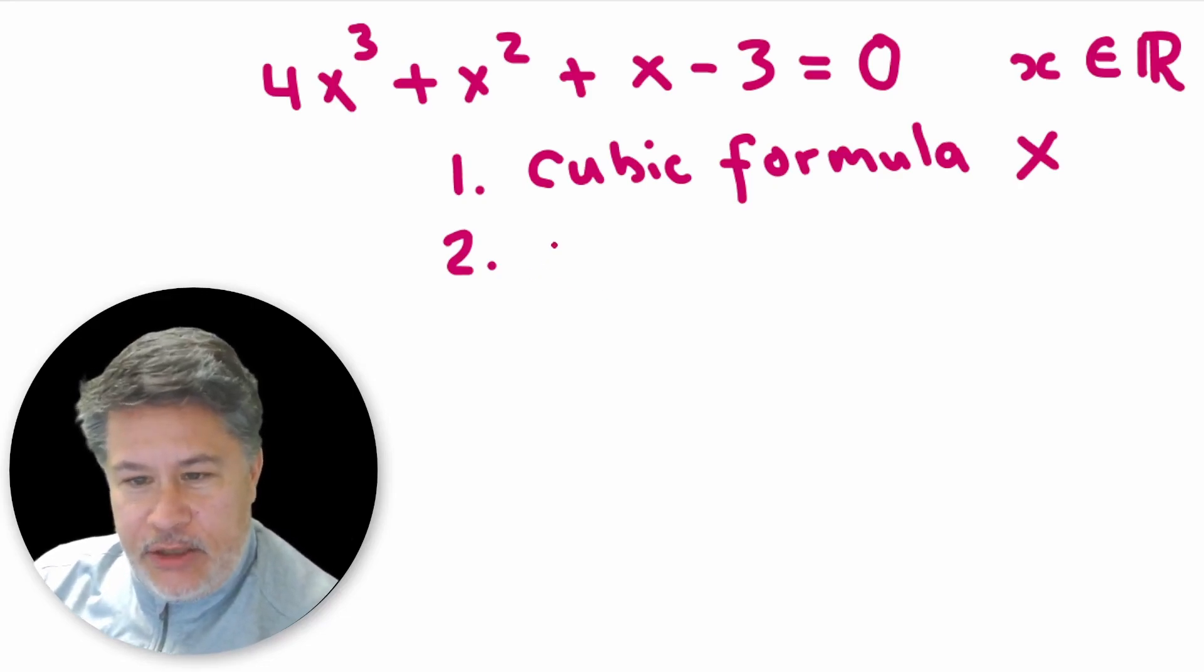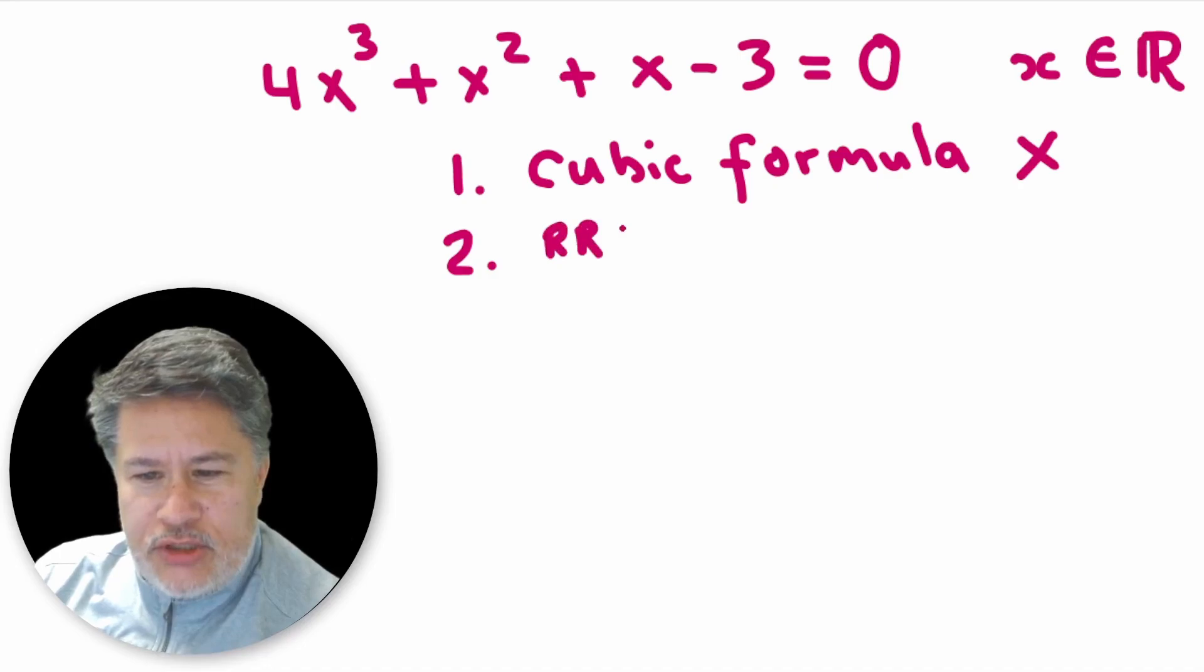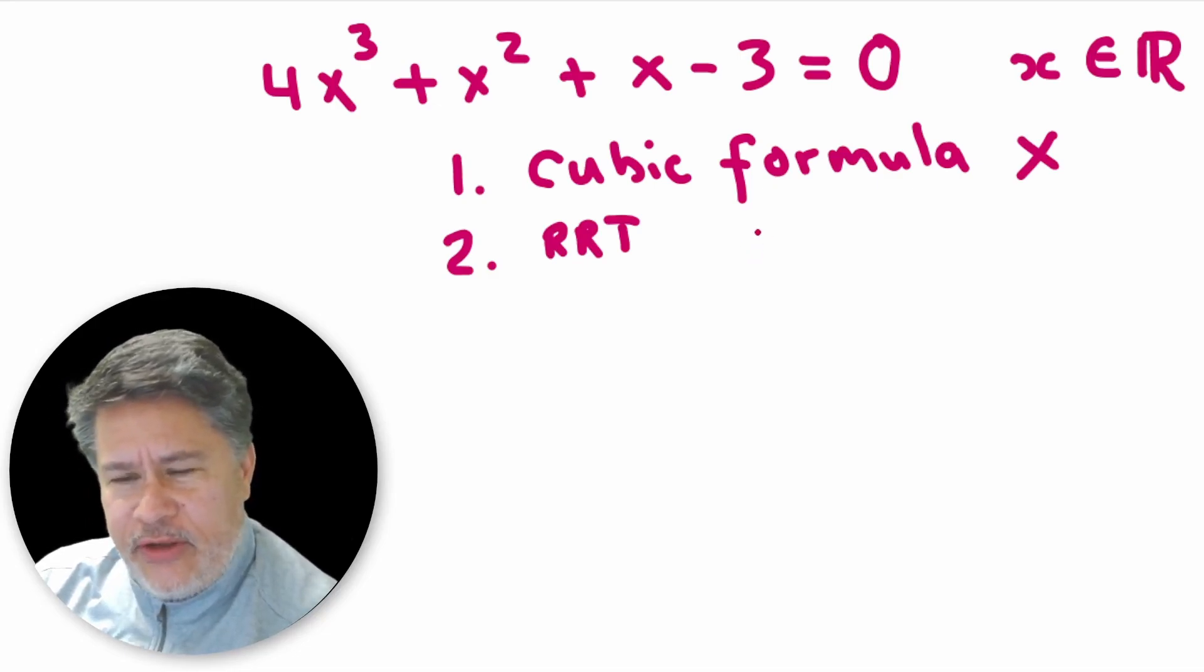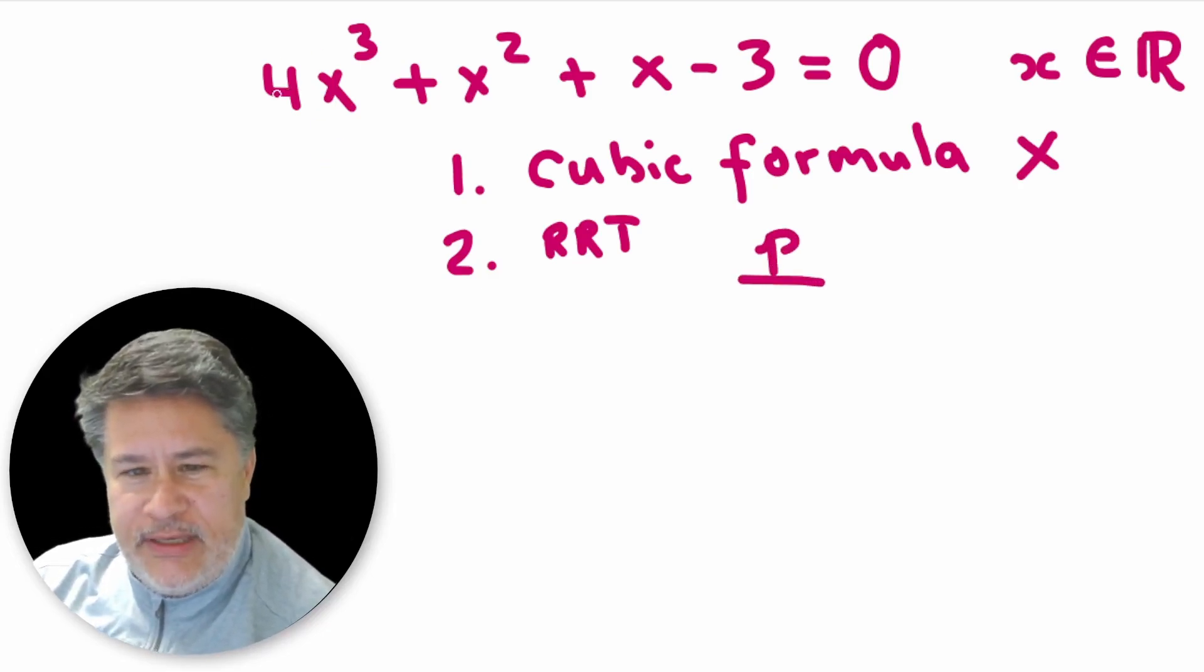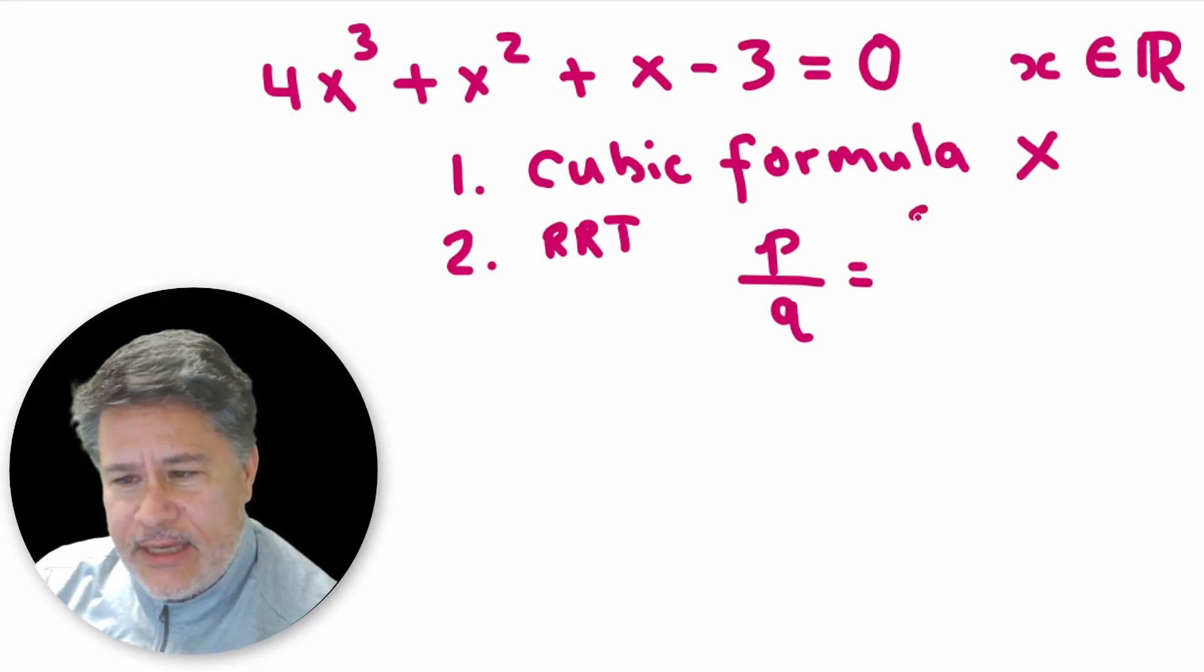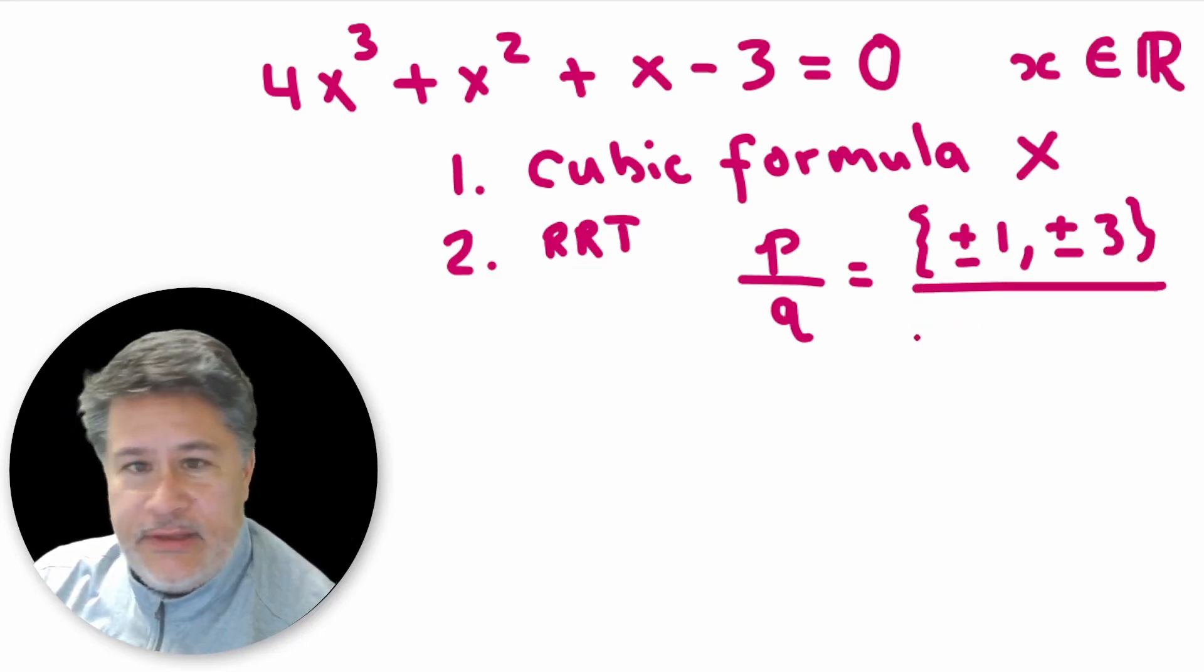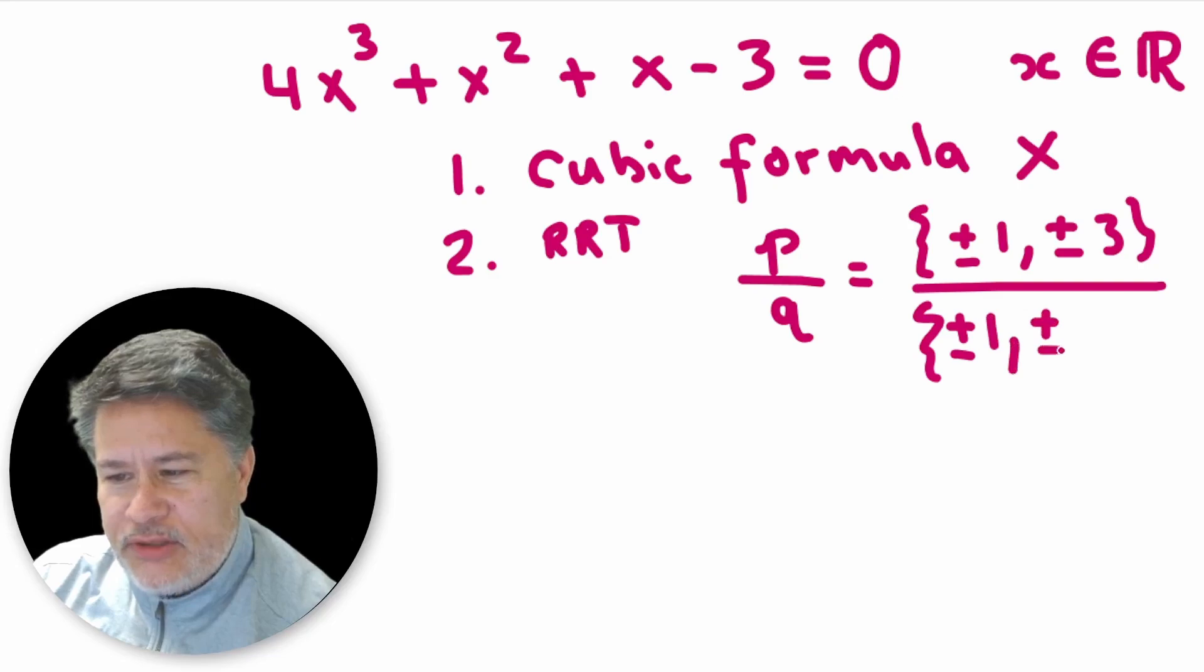Second option would be the rational roots theorem. I'll just abbreviate that RRT. So rational roots theorem would be plausible. The only problem is when you look at your factors of P, which is the constant, and you test them divided by all of the coefficients of your leading term, which is your Q, you're going to get mostly fractions. Those are not desirable to test when you're trying to do it by hand. You're going to get, for example, your P's will be plus or minus 1 and plus or minus 3.